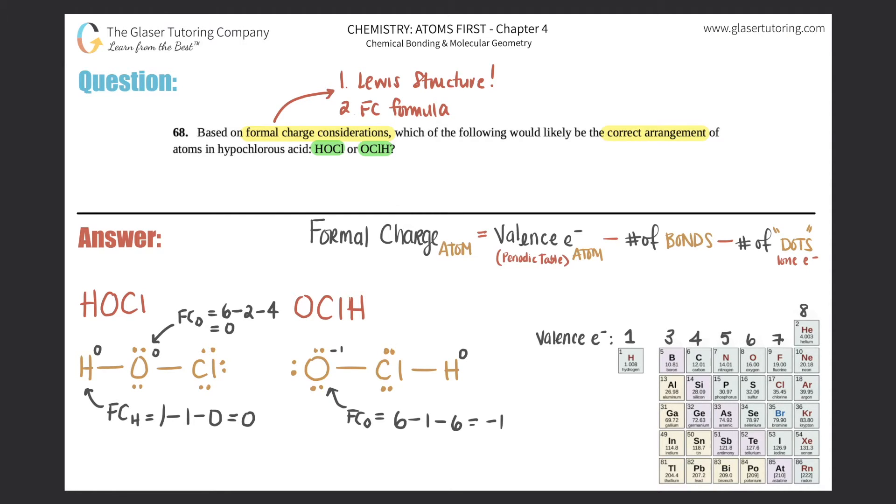Let's figure out what the chlorine is. Formal charge of chlorine: chlorine has a valence of seven, so that's seven minus it has one bond attached, so minus one, minus one, two, three, four, five, six dots or six lone electrons. If you do the math, that gives you zero. This one is all neutral.